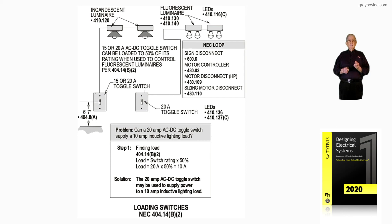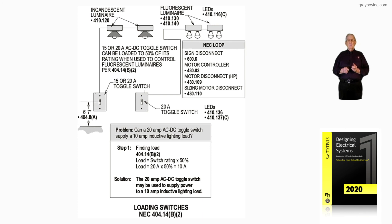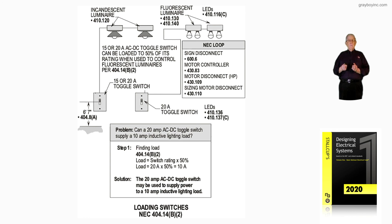The switch to the right is supplying fluorescent lighting per the requirements of 410.130 and 410.140. For LED lighting to the right, refer to 410.116C as in Car. Figure 11-40 simply illustrates loading switches based upon the type of switch in accordance with NEC 404.14 B as in Boy 2.